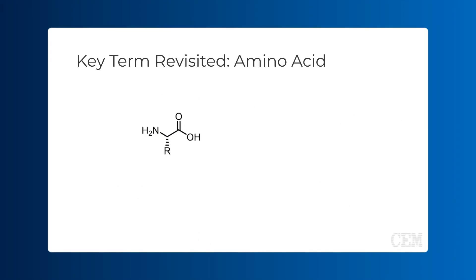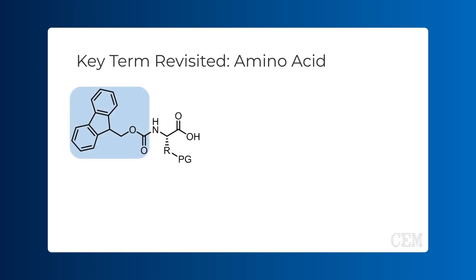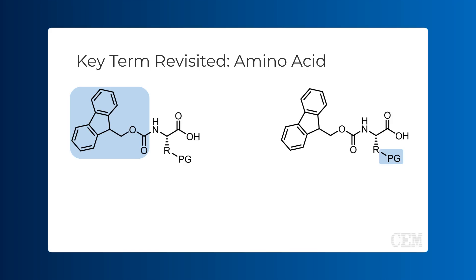In SPPS, the amino group of the amino acid being added is initially protected or blocked for better reaction control, preventing unwanted side reactions and ensuring amino acids are added one at a time in the correct order. The most common protecting group used is Fmoc (9-fluorenylmethyloxycarbonyl), because it is easily removed under mild basic conditions. Additionally, some amino acid R groups have functionality requiring protection from unwanted side reactions. While these protecting groups (PG) are stable throughout the duration of an entire peptide synthesis, they are easily removed once synthesis is complete.